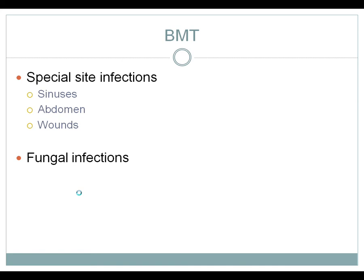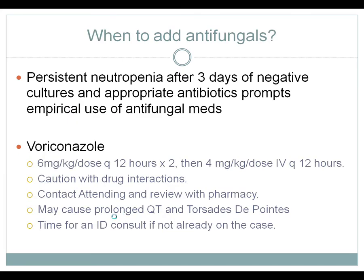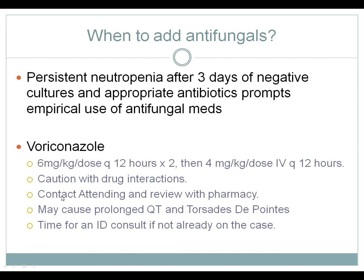Neutropenia lasting three days with fever and negative blood cultures must raise concern for possible fungal infection. Antifungals are added in a BMT patient after three days of persistent fever with negative cultures and appropriate antibiotics. We empirically use voriconazole at approximately 6 mg/kg per dose for the first day, then 4 mg/kg per dose thereafter. Voriconazole is much more easily tolerated than amphotericin, but it frequently causes interactions with other medications including tacrolimus and sirolimus, so empiric use should prompt a call and discussion with the attending and BMT pharmacist.